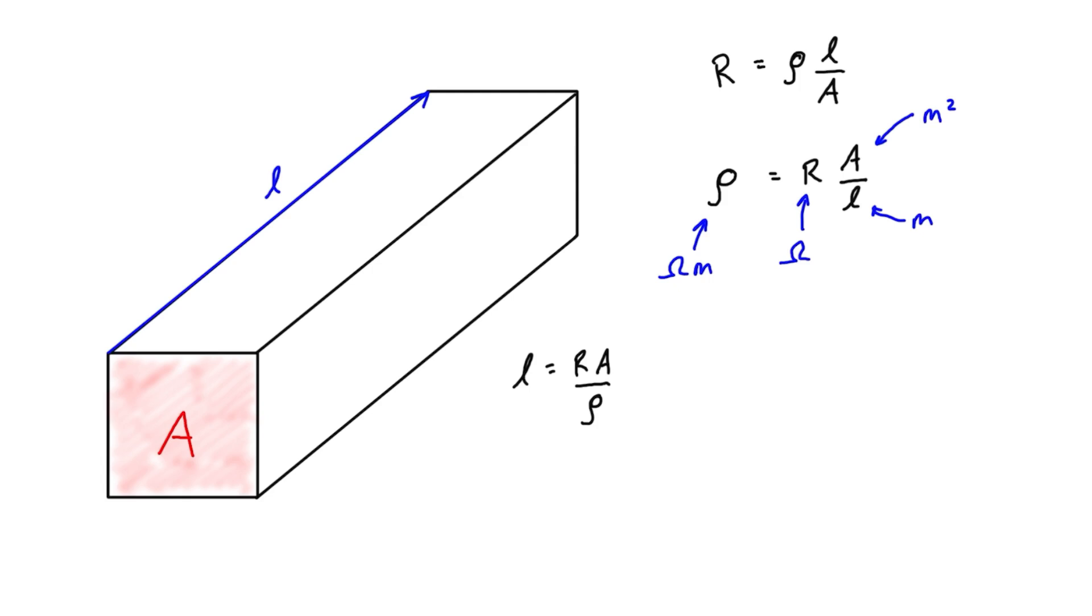So let's take a copper 10 gauge wire. And these have a cross-sectional area of 5.26 millimeter squared, which is equal to 5.26 times 10 to the negative 6 meter squared.